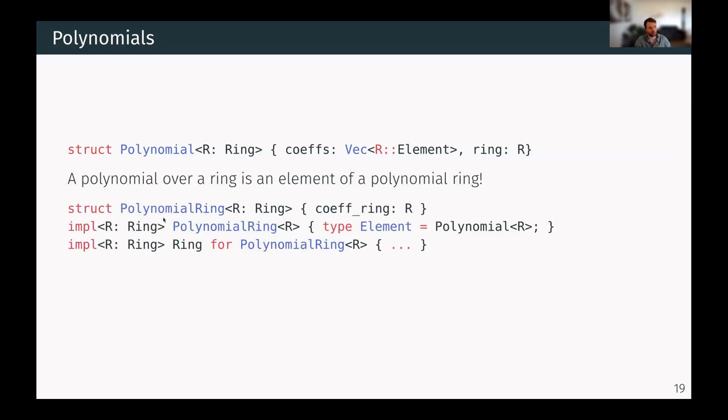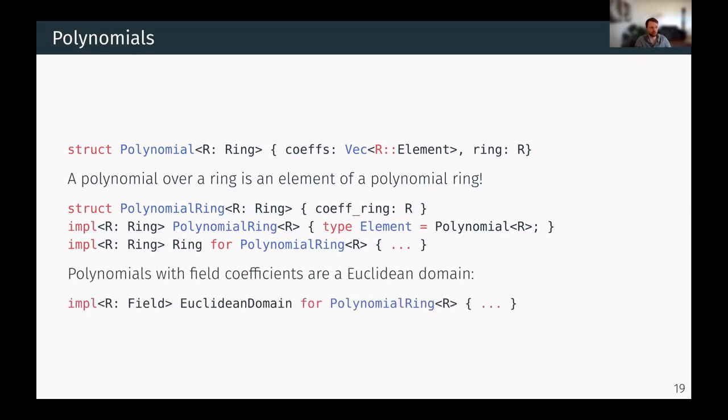So we create the structure of polynomial ring that implements ring and sets the element type to be polynomial of R. And we can go further because we know that if the coefficient of a polynomial is a field, the polynomial itself would be a Euclidean domain. So this works very, very nicely.